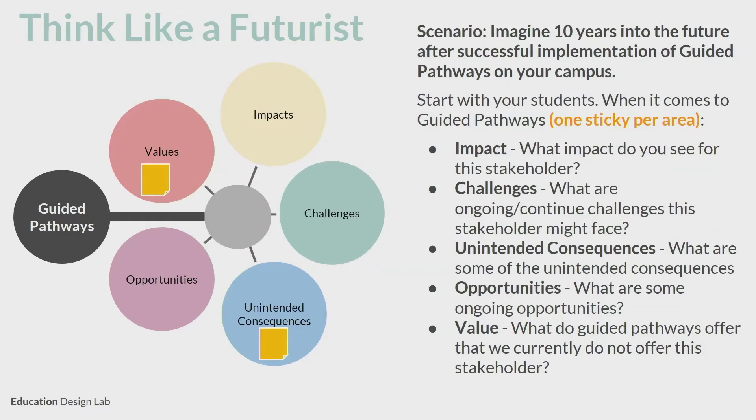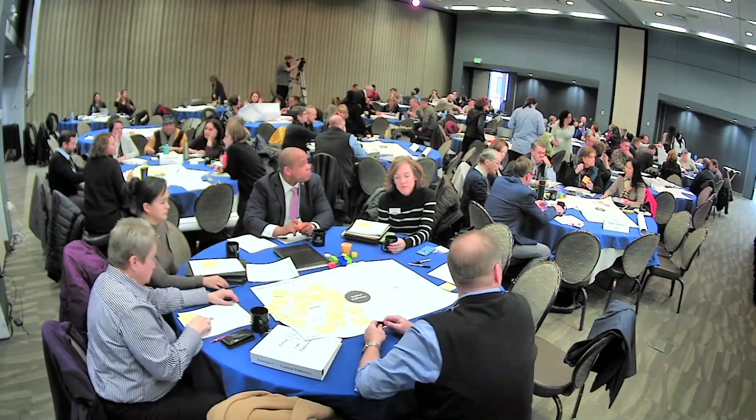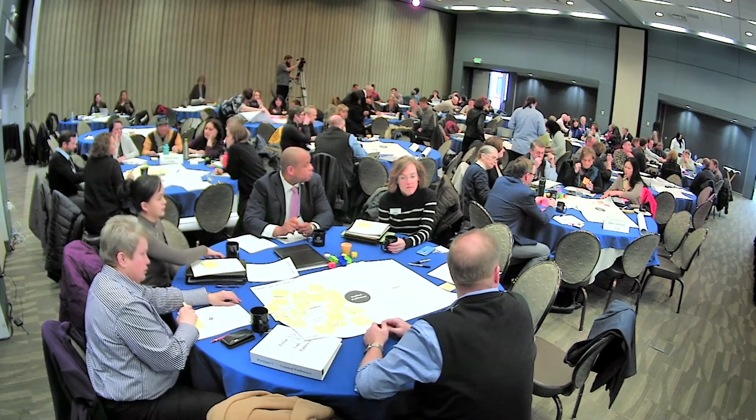As you start wrapping up on your student section, what we're going to ask you is to move to your other stakeholder. We know that there are a lot of other stakeholders as we look at this implementation and Guided Pathways. So there are different stakeholders at your table — we have faculty, we have staff and community. So now we're asking you to come together again as a group and think about the impact, the challenges, the unintended consequences and so on for your other stakeholder: the community, the staff, the faculty at your institution. We're going to do another two or three minutes for you to fill out that other side.